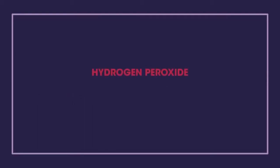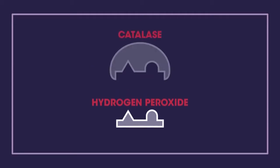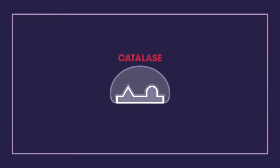Hydrogen peroxide is often formed as a result of the reactions in cells, and if it is left behind to build up, it is harmful. Luckily, we have catalase enzymes that are really fast — they break the hydrogen peroxide down into harmless water and oxygen.